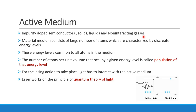The energy levels are discrete. We have the ground state, then the first excited state, then the second excited state — these are the ideal discrete energy levels. Atoms occupy these distinct, separate energy levels.